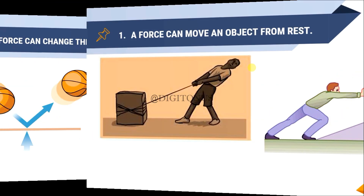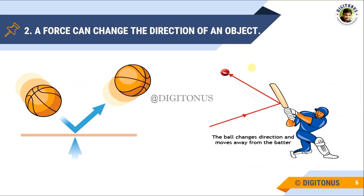A force can change the direction of an object. You can see in the figure — like if a batsman is batting, he will hit the ball in the direction opposite to the ball coming to him. He is changing the direction of the ball by applying force. You can see another example: there is a ruler, and when a ball hits the ruler, after hitting it the ball changes its direction. When force is applied by the ruler, the ball changes its direction. So due to the effect of force, the direction of an object can change.